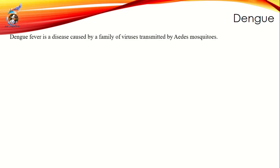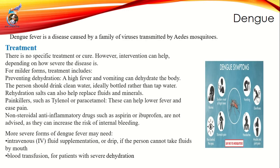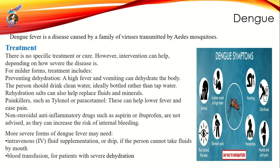The next disease is Dengue, also known as break bone disease. It is called break bone disease because there is a lot of pain in the bones and body, as if bones have been broken. It is a viral, vector-borne disease. The vector is a mosquito called Aedes aegypti.